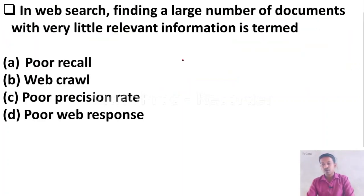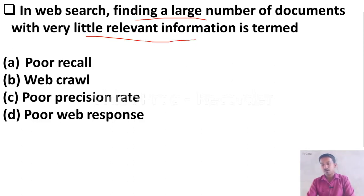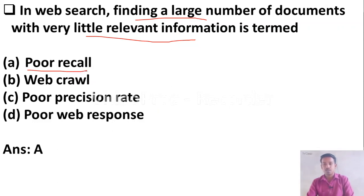In web search, finding a large number of documents with very little relevant information is termed — Option A: poor recall, Option B: web crawl, Option C: poor precision rate, Option D: poor web response. The right answer is Option A, poor recall.